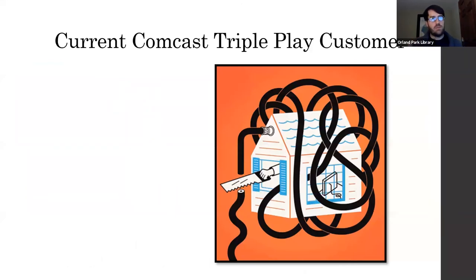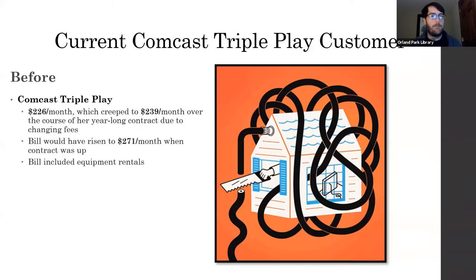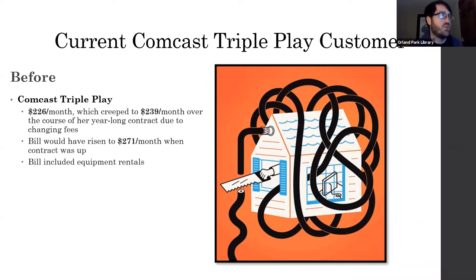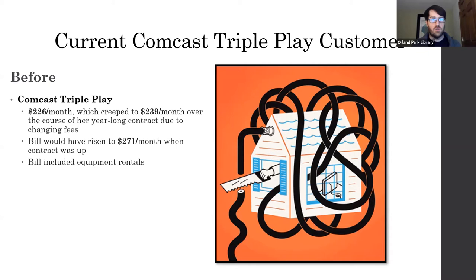Let's talk about that current Comcast customer. They were a TriplePlay customer — internet, cable TV, and phone. Before coming to me, they were paying $226 a month for these three services, which crept up to $239 a month over the course of their year-long contract due to changing fees. Taxes, broadcast fees, and things like that can change. The bill would have risen to $271 a month when the contract was up. ISPs sign you up for a good deal for a year, then fees go up by a pretty decent percentage when that promotional rate is over.